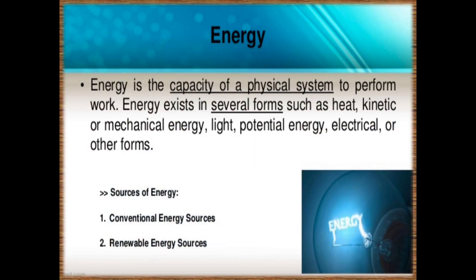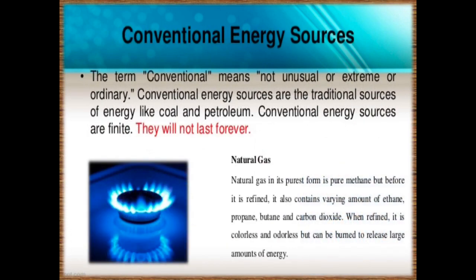What is energy? Energy is the capacity of a physical system to perform work. Energy exists in several forms like heat, kinetic, and mechanical — all these are included in energy. If we talk about conventional energy sources, the word conventional means not unusual or extreme, basically ordinary. Conventional sources of energy are those that have been in common use for a long period of time. The main conventional sources of energy are fossil fuels and firewood.